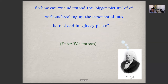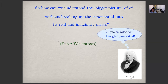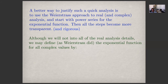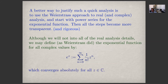Enter Weierstrass, who develops very rigorously all of real analysis and complex analysis from scratch using initially just power series. He defined e^z to be the summation of (1/n!) z^n, with n going from zero to infinity. This is valid for all complex z. It converges very rapidly because of the 1/n! factor, and converges absolutely, so we can rearrange terms as we like.